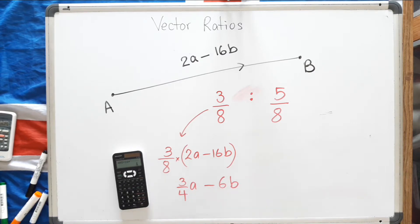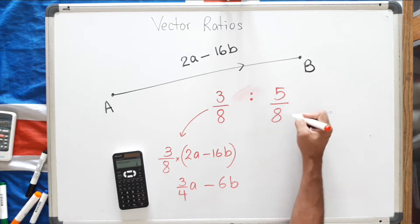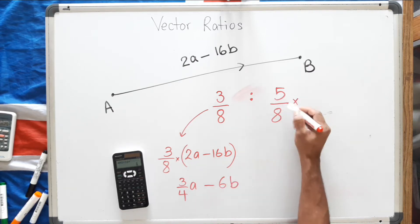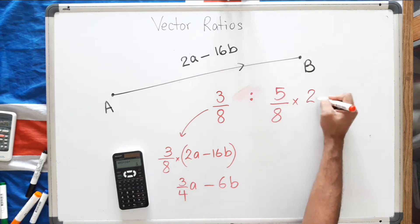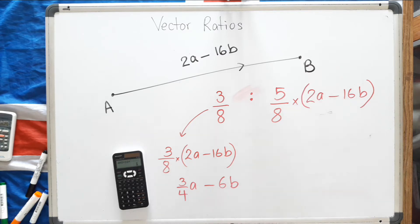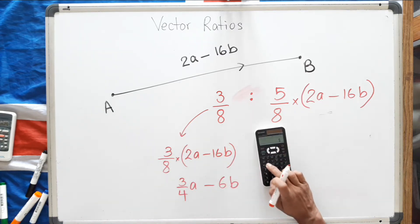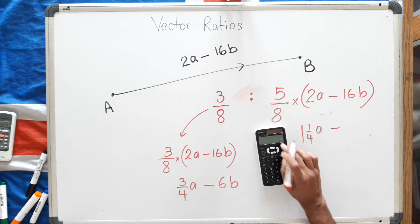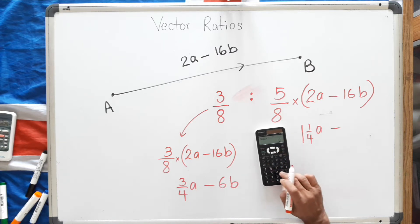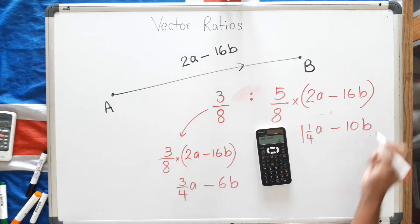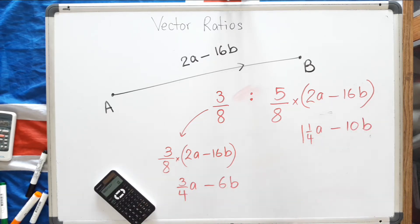One person will get three quarter a minus 6b of the vector. For the other person, we find 5 eighths of the vector. 5 eighths multiplied by 2a is one and a quarter a, and 5 eighths multiplied by 16 gives 10, so the other person gets one and a quarter a minus 10b.